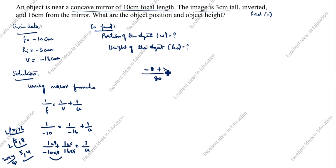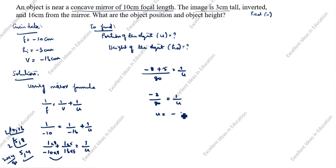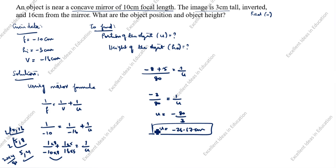The result is minus 3 divided by 80 equals 1/u. Therefore u equals minus 80 divided by 3, which gives u equals minus 26.67 centimeter. So the position of the object is minus 26.67 centimeter.